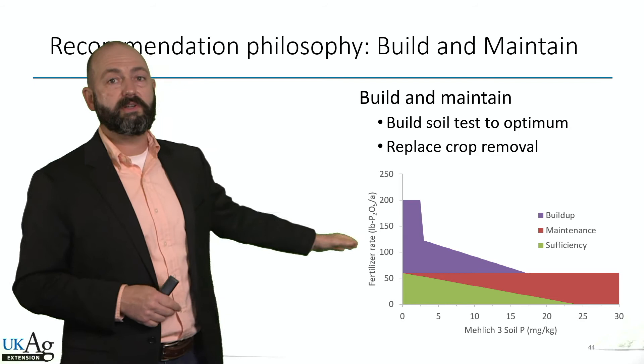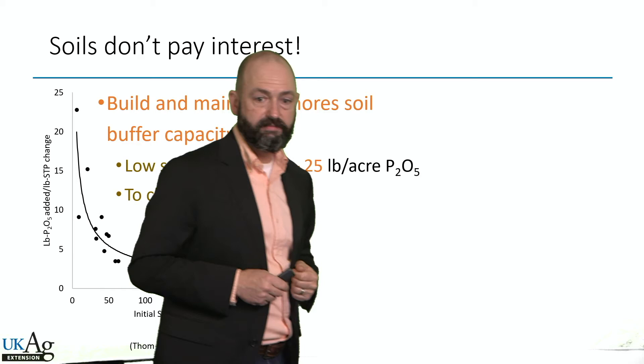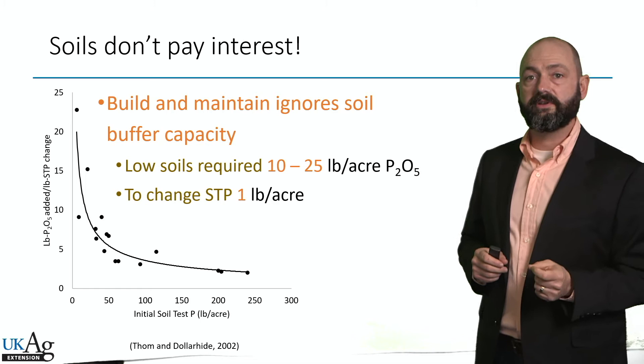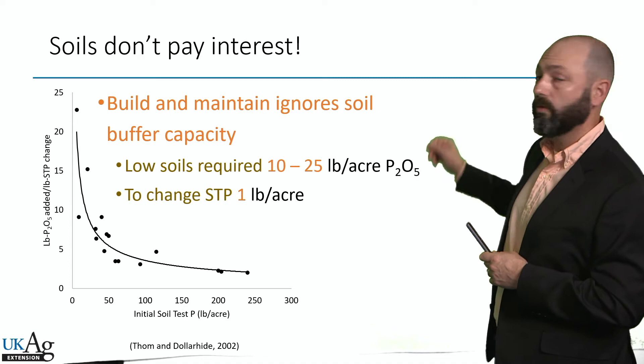Build and maintain tends to be really wasteful, so no one uses a pure build and maintain; people work somewhere in between those two points. One of the problems with build and maintain is that soils don't pay interest. Using some Kentucky data, it shows the pounds of phosphorus fertilizer needed to change soil test by one unit — that's the vertical axis — and on the horizontal axis is the initial soil test level.